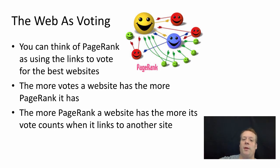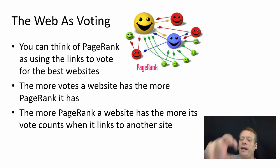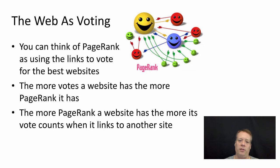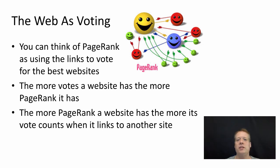The more votes a website has, the more PageRank it has. And the more PageRank a website has, the more it gets to vote for another website. This could all be formulated as a mathematical problem. And when you solve it, it turns out it's fairly easy to solve — you don't need to know necessarily the whole structure. There are ways to do bounded versions of it, which makes it work really well.